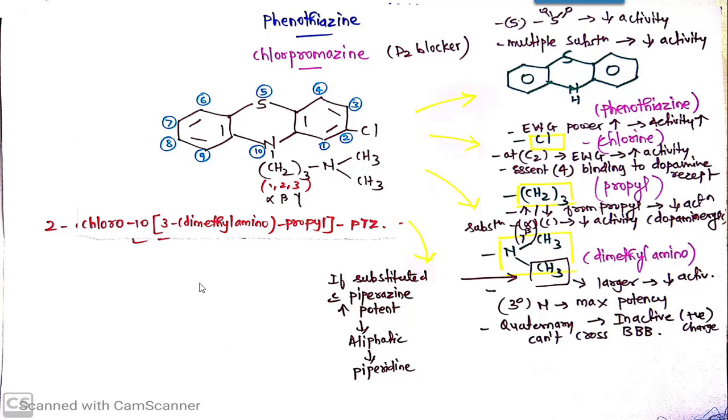Chlorpromazine is basically a Phenothiazine derivative and it is a dopamine blocker, D2 blocker. This is the Phenothiazine ring which you can see along with the numbering, and this is second position substituent that is chlorine, so it is Chlor.